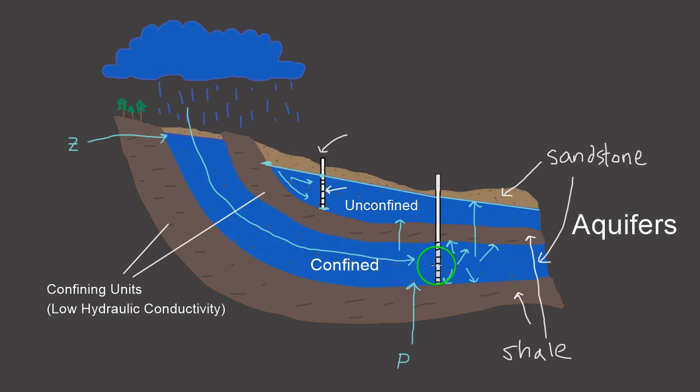And so when we put a well inside of a confined aquifer, the pressure built up inside this aquifer is going to force the water up through the well and to the surface. And this is what we call a flowing artesian well. When you have a well inside of a confined aquifer and that pressure forces the water up above the surface.